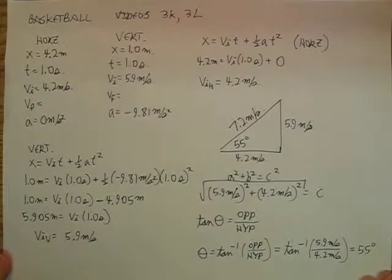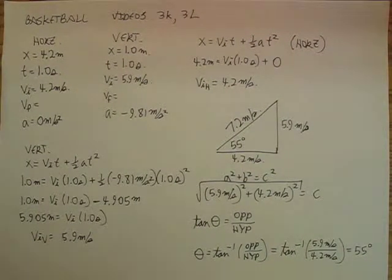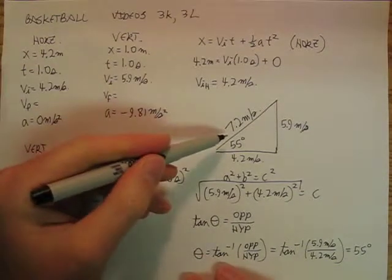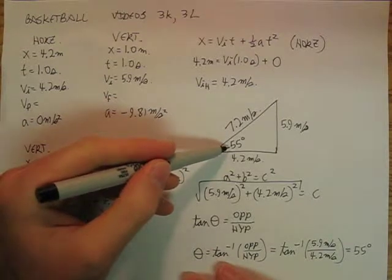Okay, so in other words, when that basketball was thrown at the hoop, it traveled along a parabolic trajectory, and the initial velocity of the basketball was 7.2 meters per second at an angle of 55 degrees.